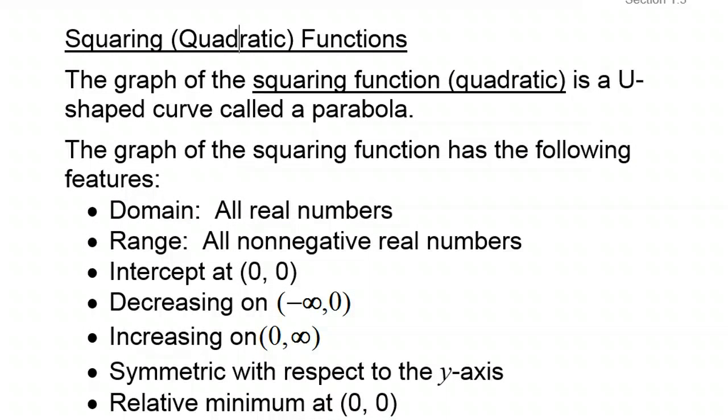For quadratic functions, sometimes called the squaring functions, you get a u-shaped curve called a parabola. This also should be familiar because we did these just a little in Algebra 1, but quite a bit more in Algebra 2. As far as the statistics for those, the domain is going to be all real numbers. The range is going to be all real numbers greater than or equal to 0.